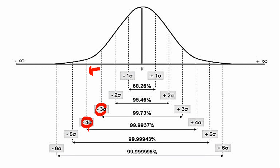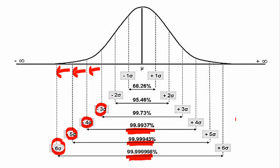4 sigma means 99.9937% of the data points will fall within plus or minus 4 standard deviations from the mean. 5 sigma means 99.999937% of the data points will fall within plus or minus 5 standard deviations from the mean. 6 sigma means 99.99999938% of the data points fall within plus or minus 6 standard deviations from the mean.